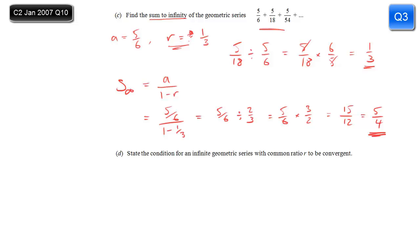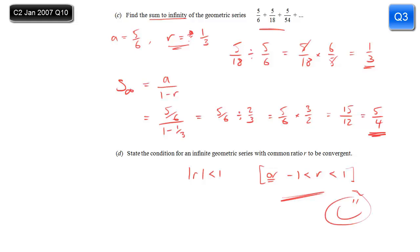What is the condition for an infinite geometric series to be convergent? The simplest way to write it is that the modulus of r is less than 1 — meaning if you ignore the sign, the common ratio is less than 1. You might also write it as r being strictly between minus 1 and plus 1. Make sure they are strict inequalities, because if r equals 1 or minus 1, it doesn't work.